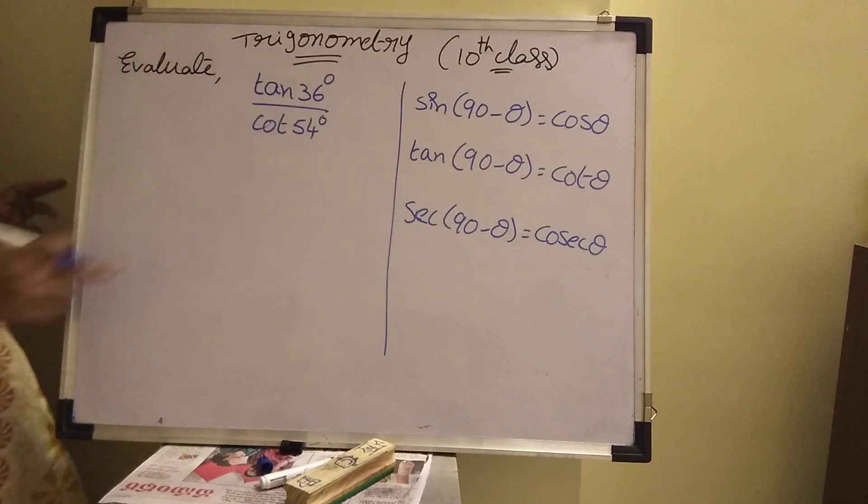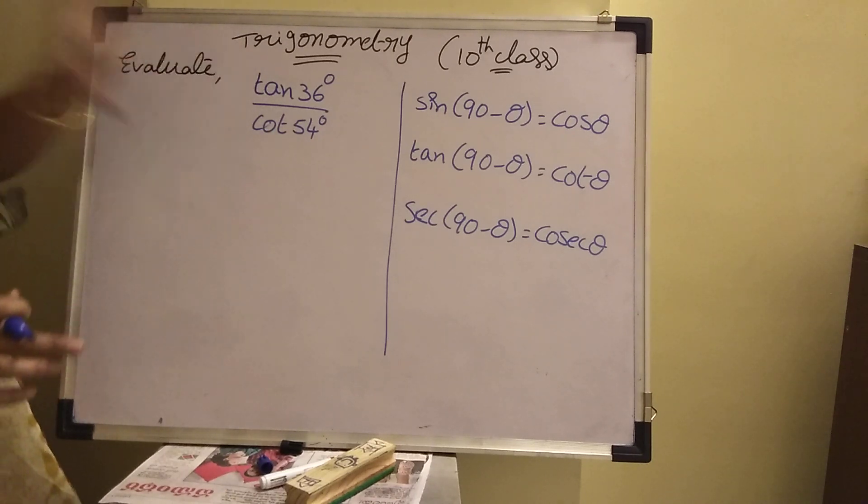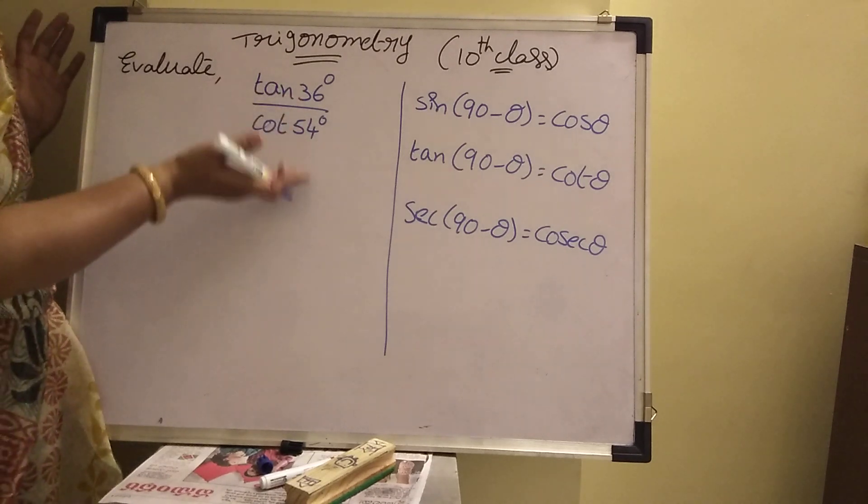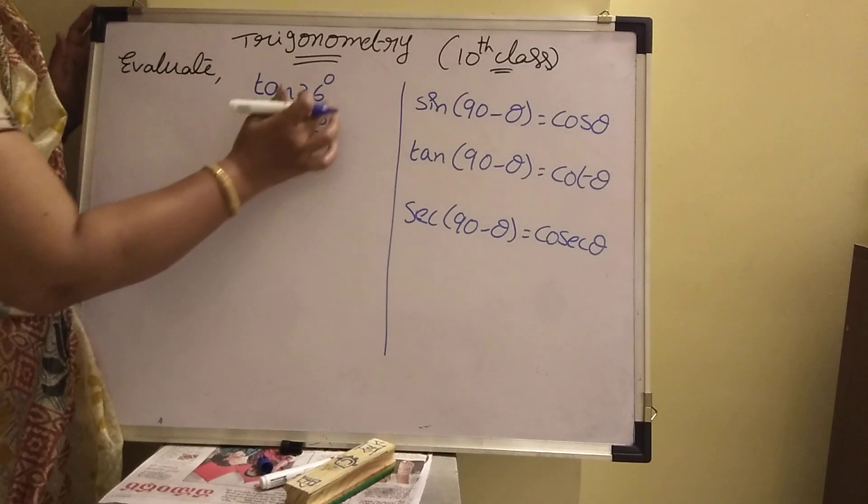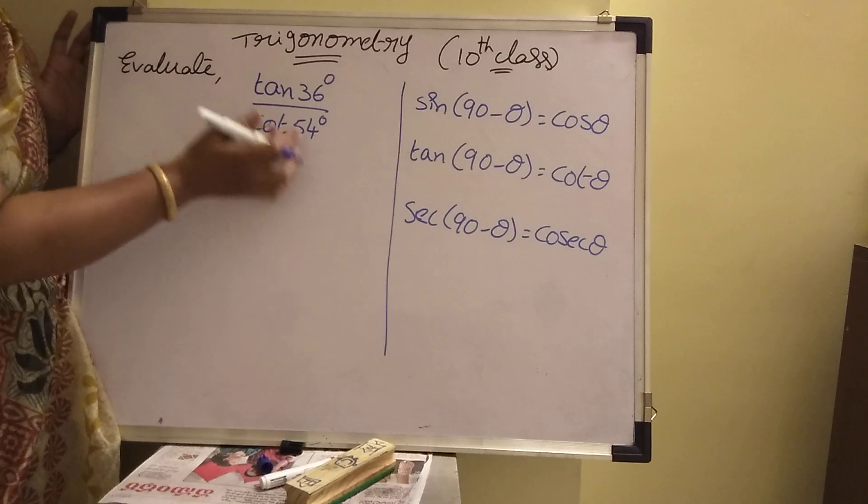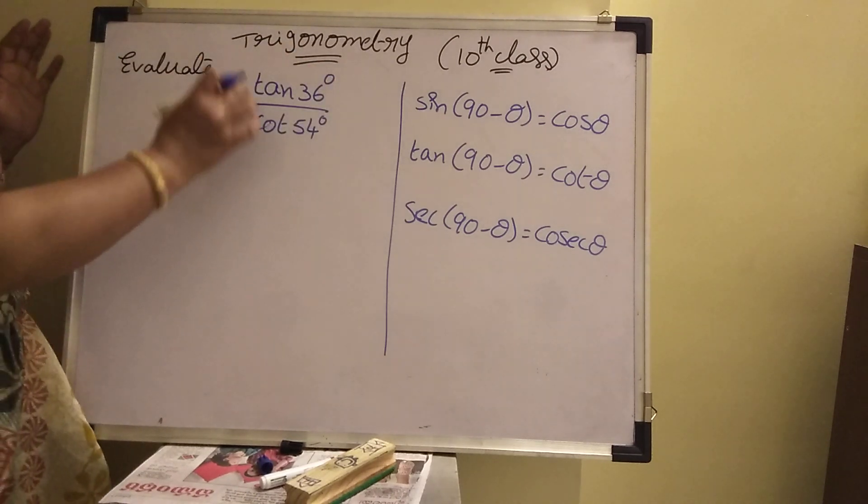Now see, tan of 36 degrees divided by cot of 54 degrees is there. How to find out these values? We don't know 36 and also 54 value, right? Then how will you find? Here both are complementary angles. Sum of 2 angles, add them these 2 angles.